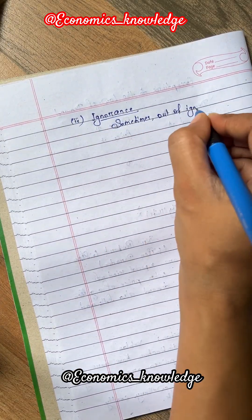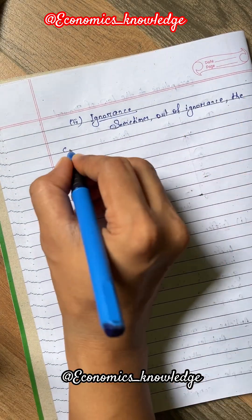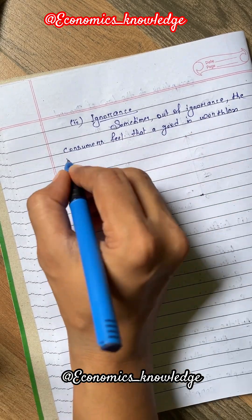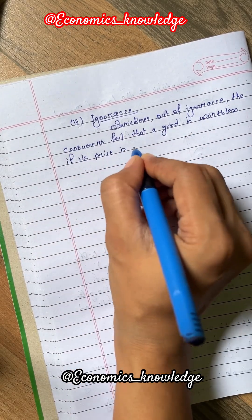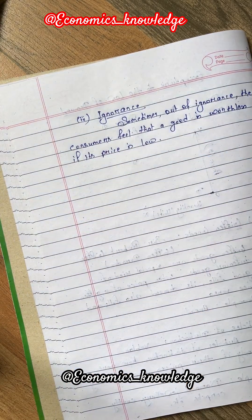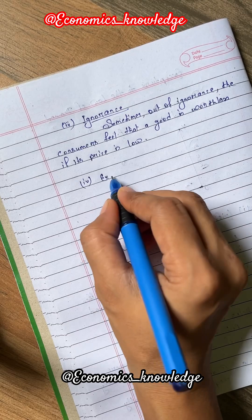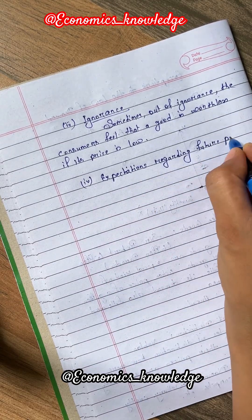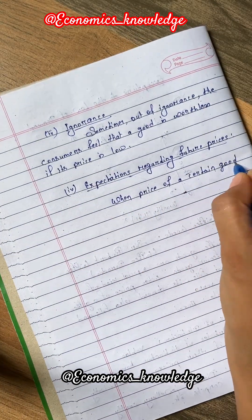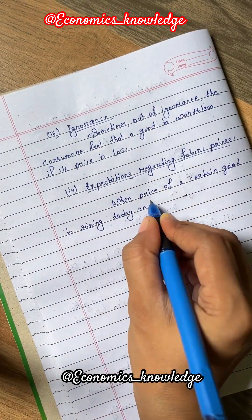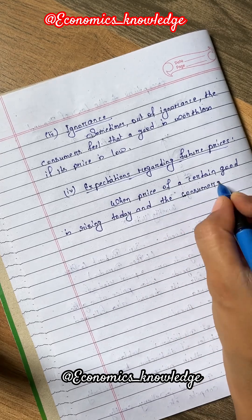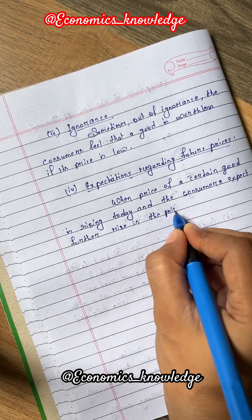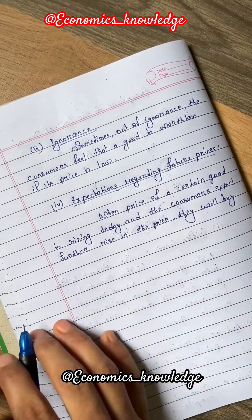Number 3, Ignorance. Sometimes out of ignorance, consumers feel that a good is worthless if its price is low. Number 4, Expectations Regarding Future Prices. When the price of a certain good is rising today and consumers expect a further rise in price, they will buy more of it and store it up despite the increase in price.